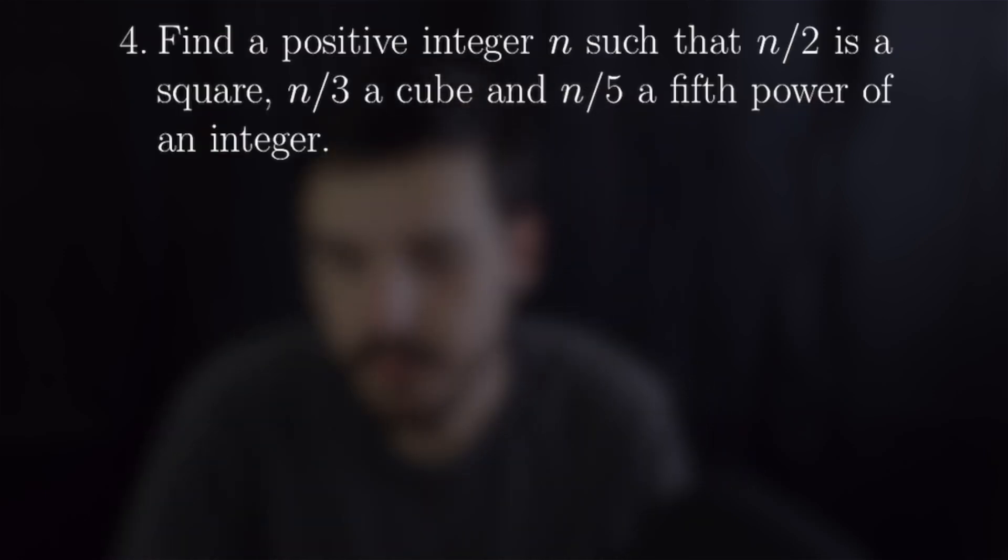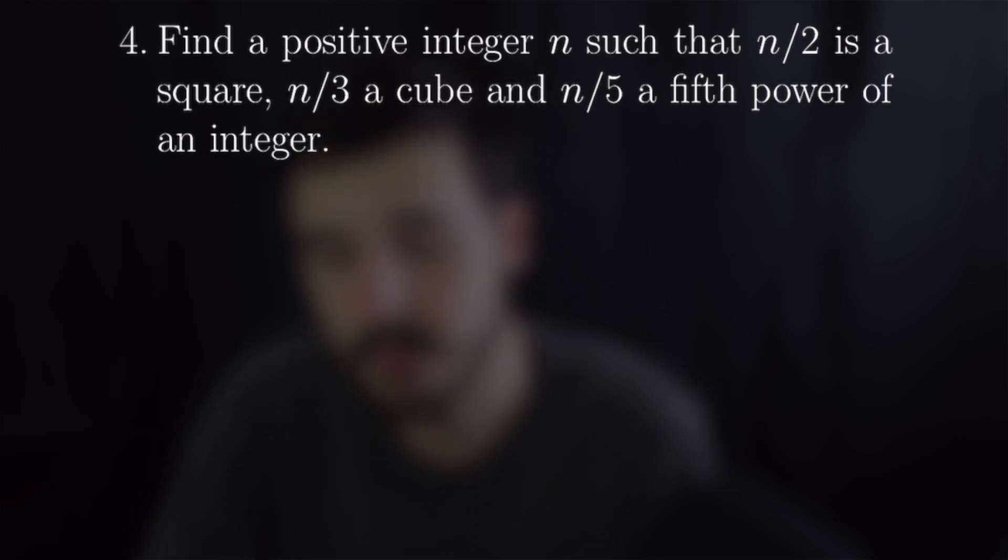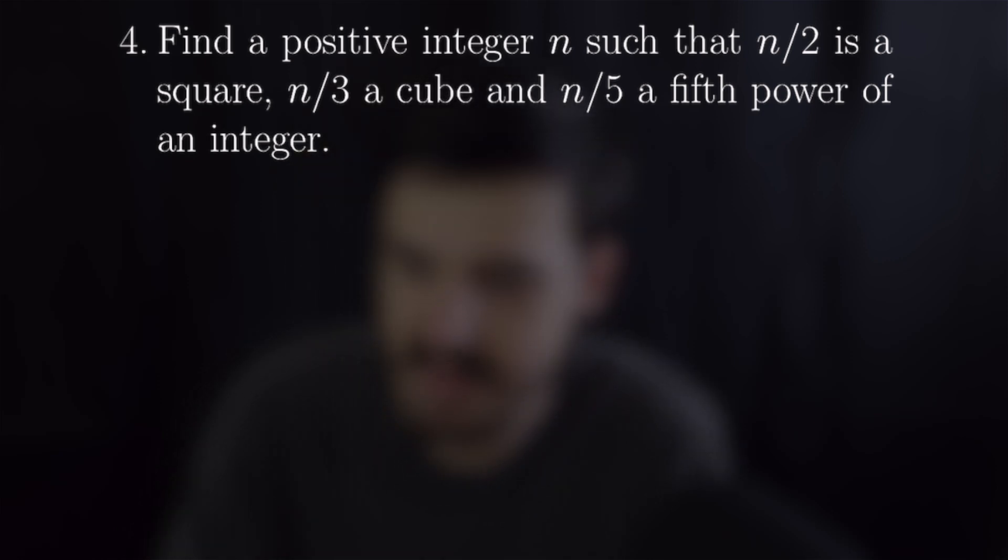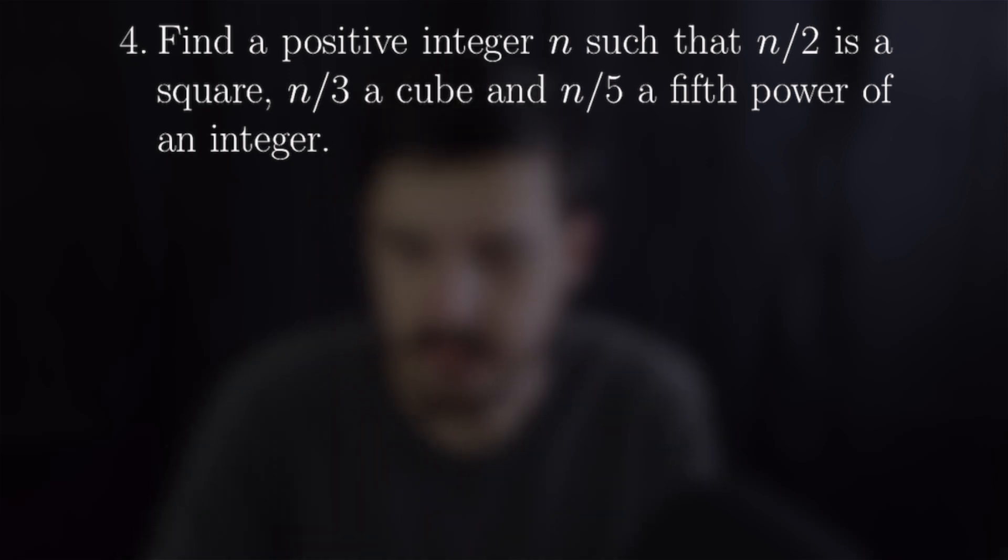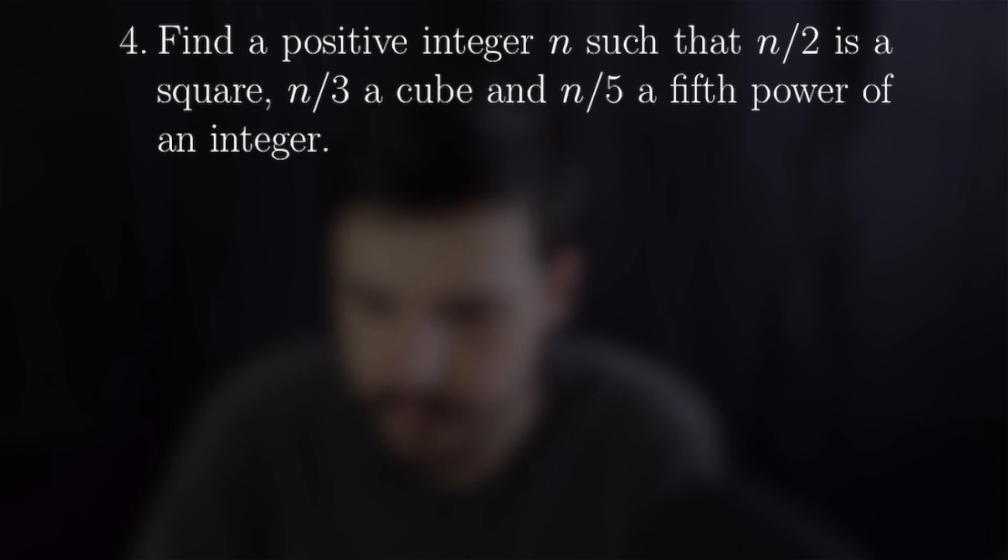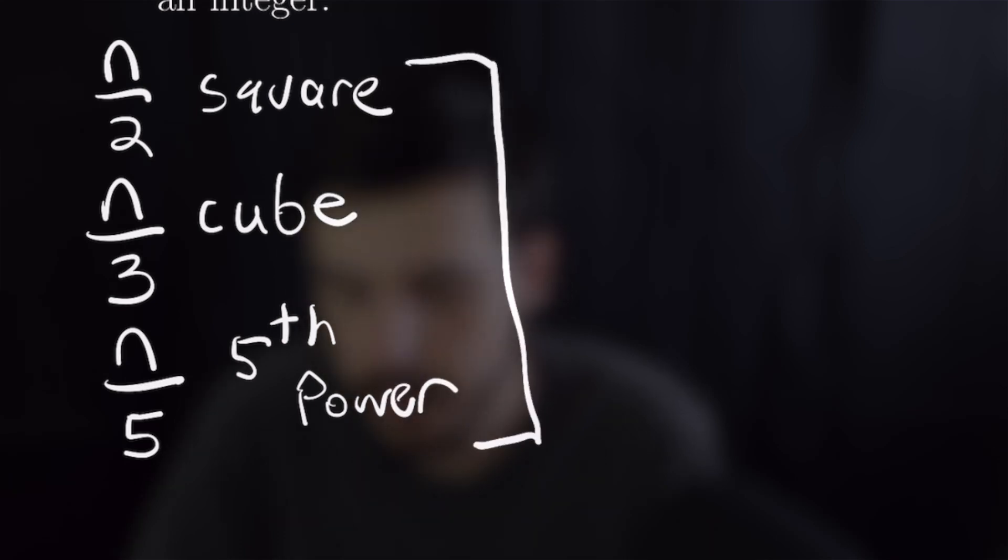Our fourth example is find a positive integer n such that n over 2 is a square, n over 3 is a cube and n over 5 is a fifth power of an integer. So what can we conclude from that? Well let's write out our rules here. We have n over 2 is equal to a square, n over 3 is a cube and n over 5 is a fifth power.